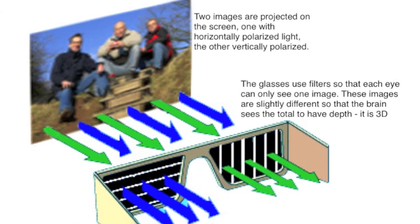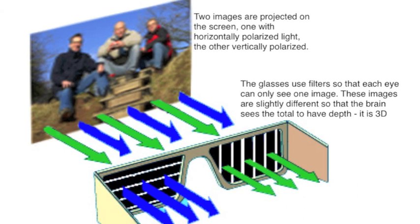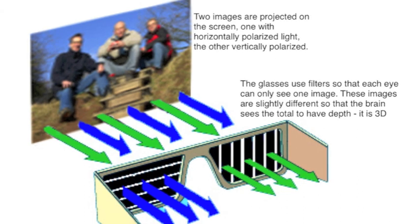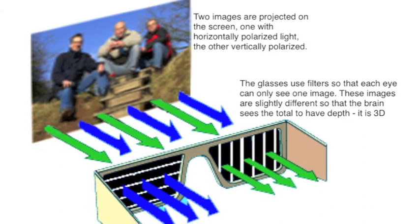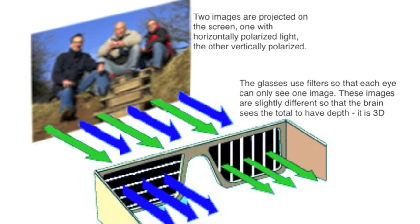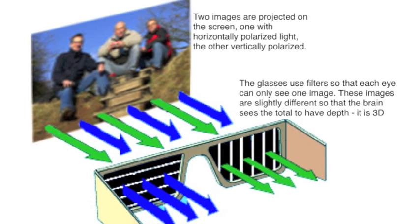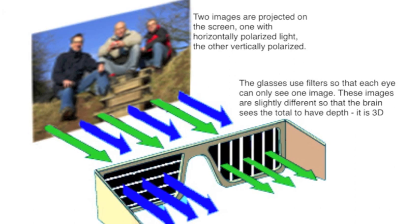To the naked eye, the images are slightly out of alignment, and therefore the image looks blurred. One with horizontally polarized light, and the other with vertically polarized light. The glasses you wear use filters, one horizontally organized, and the other vertically aligned.